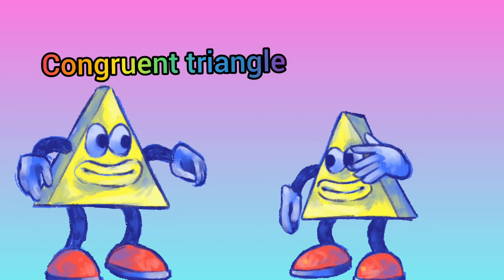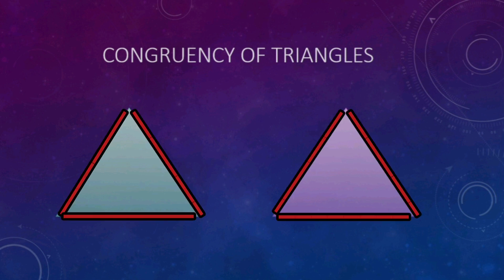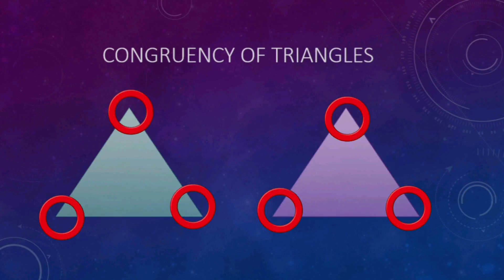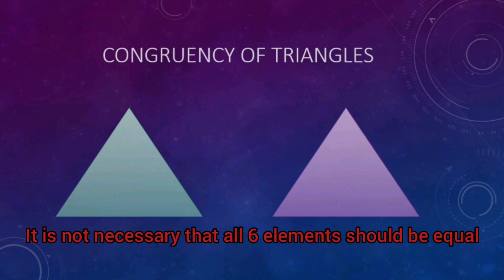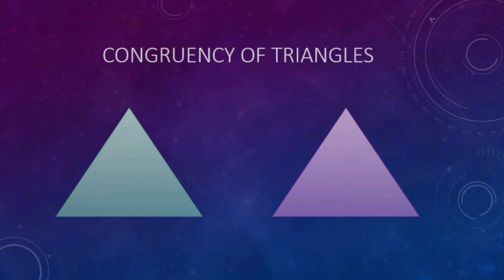I am a polygon with three sides, but I can't find my twin brother. You mean me? Two triangles are said to be congruent if the sides and angles have the same measurement, such that the two triangles can be superimposed. But it is not necessary that all six elements should be equal.